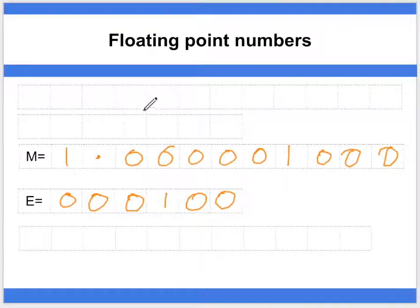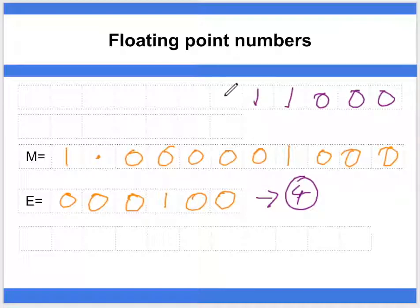To solve this one, the exponent is going to be a value of four. Our mantissa, which we're going to need to perform two's complement on, we're going to leave everything up to and including the first one alone.